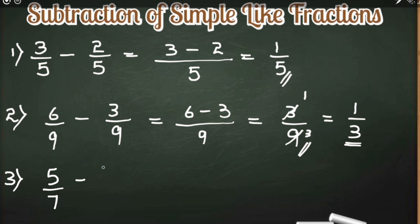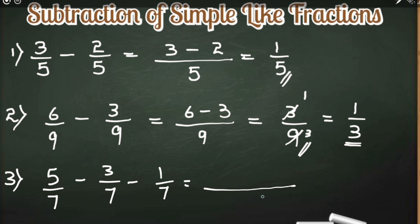Now let us take another example. Here I have written 5 by 7 minus 3 by 7 minus 1 by 7. You can see there are 3 fractions — 3 simple like fractions — and all the denominators are the same. So again, only the numerators will be subtracted: 5 minus 3 minus 1.